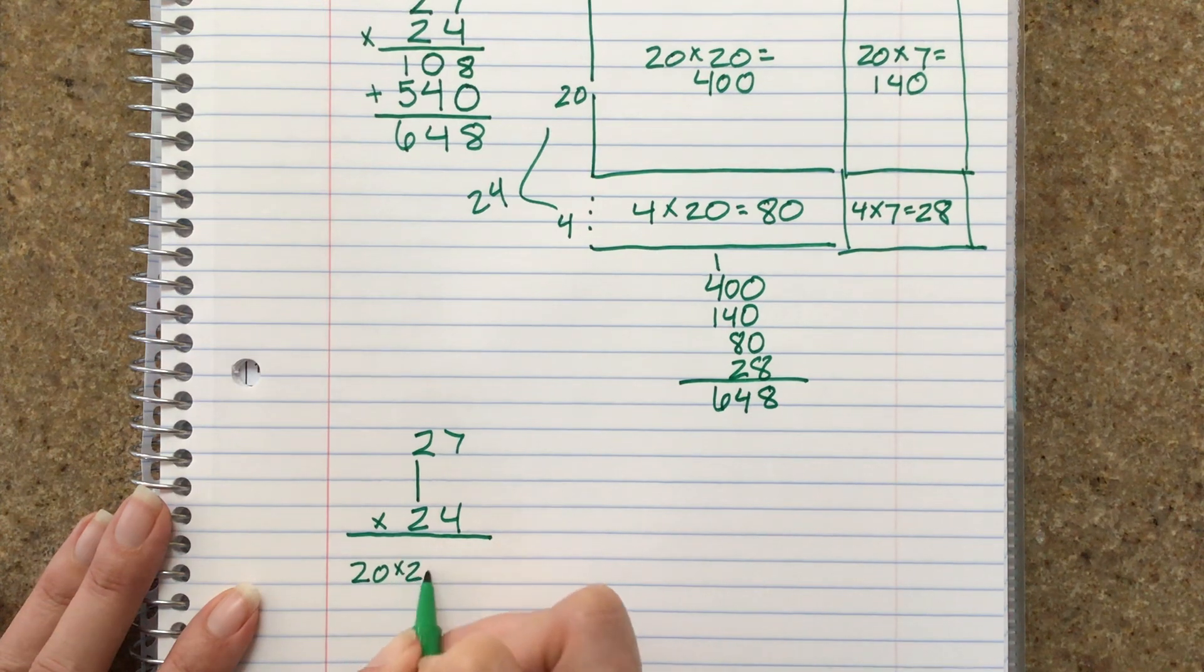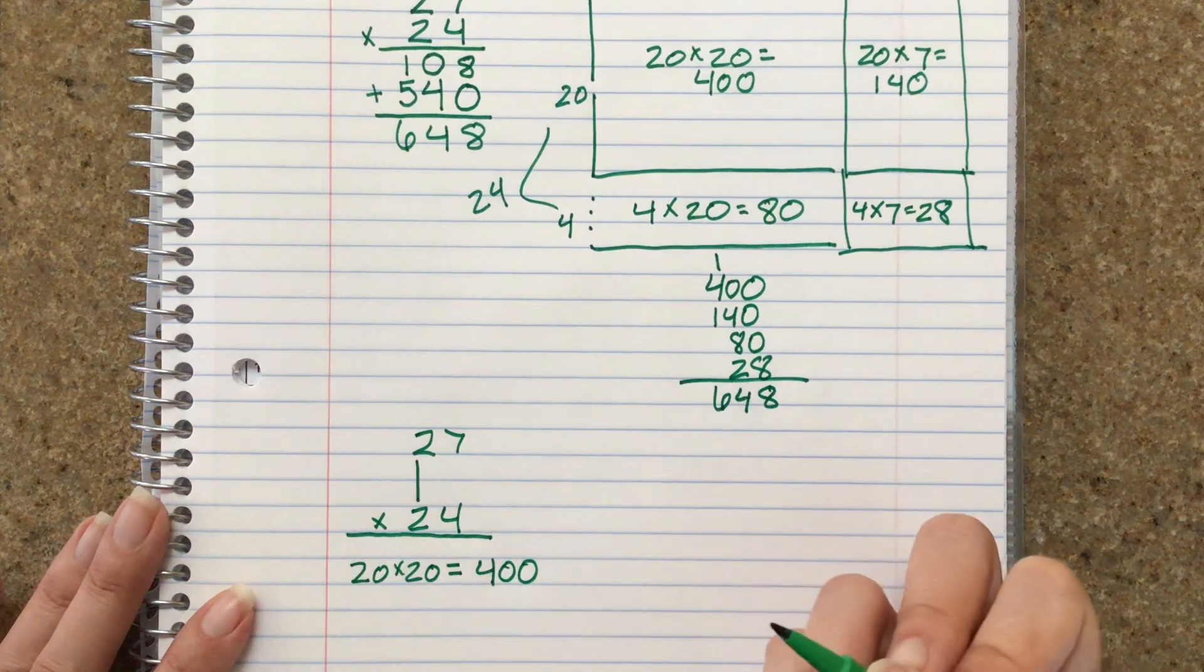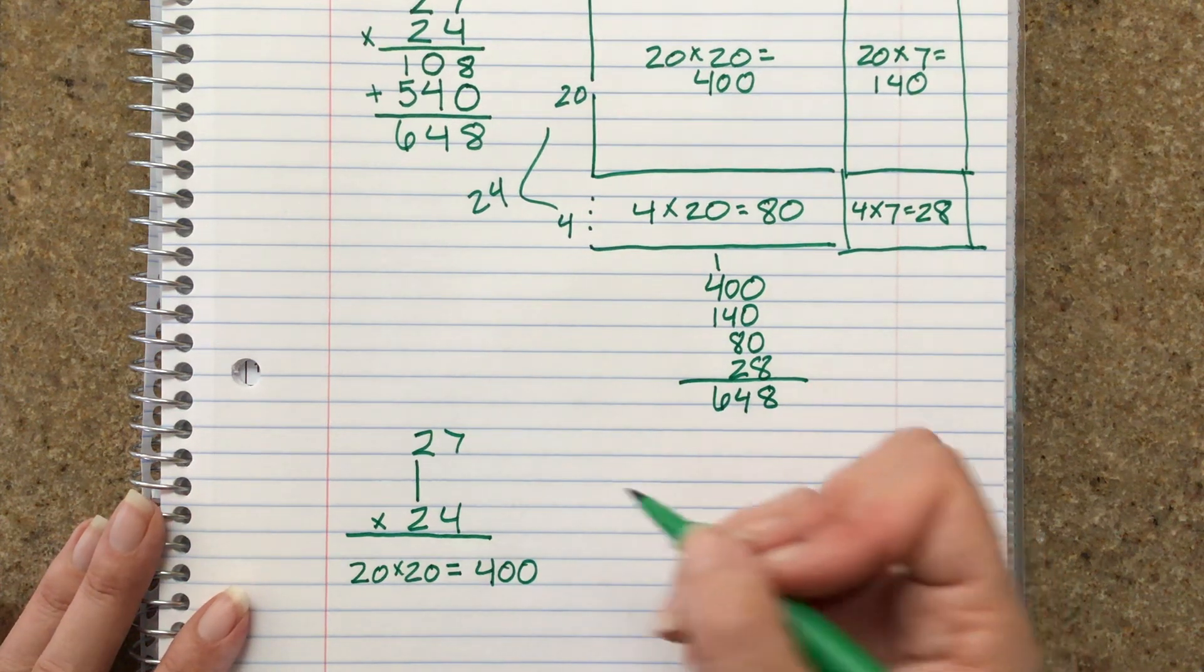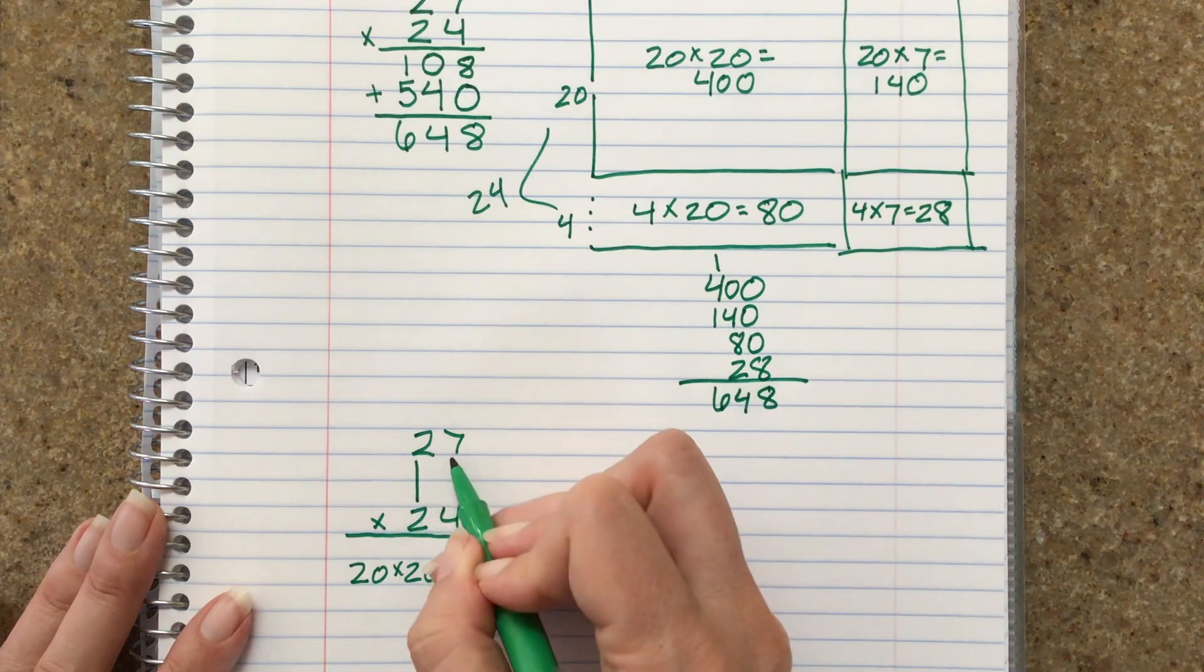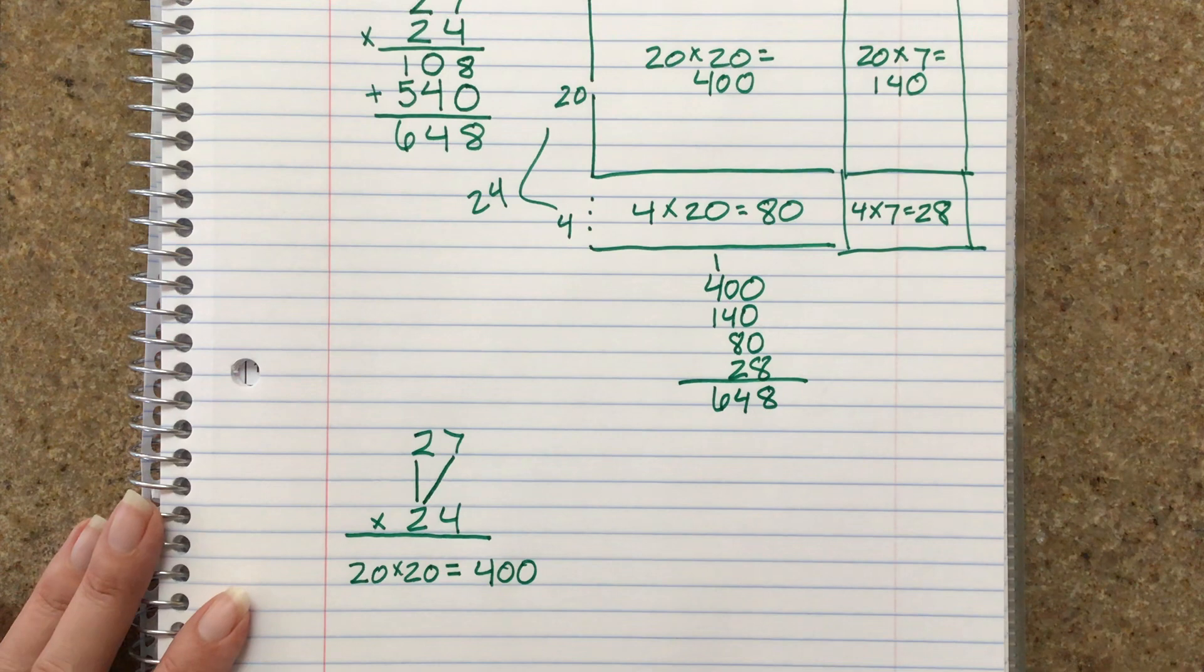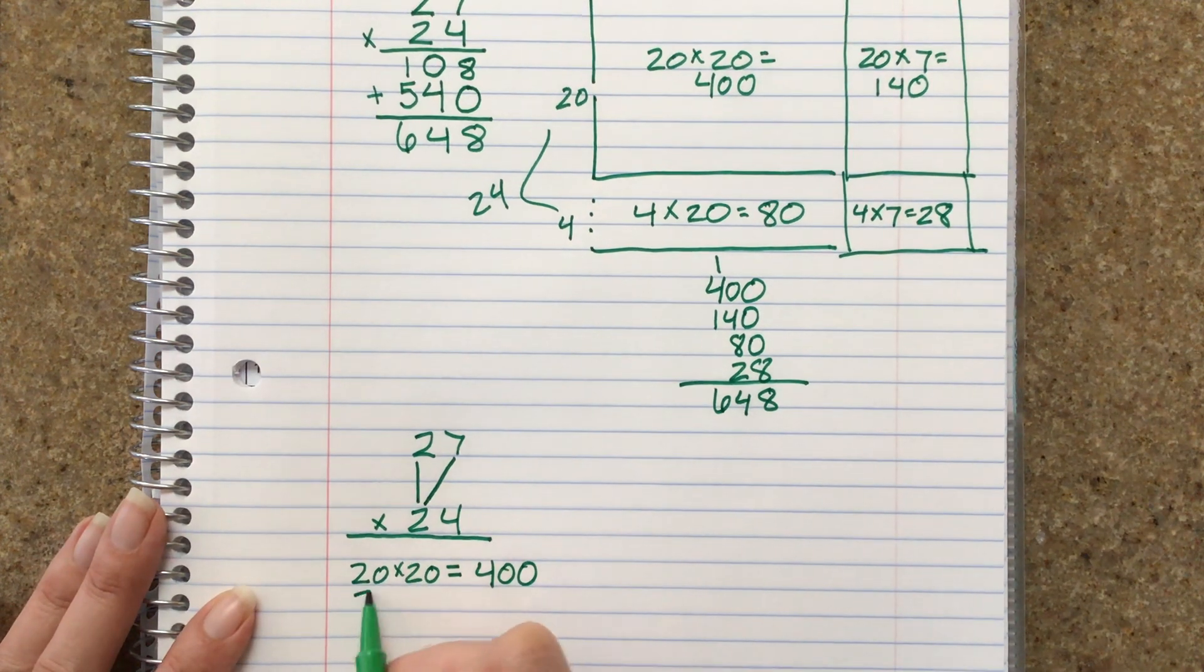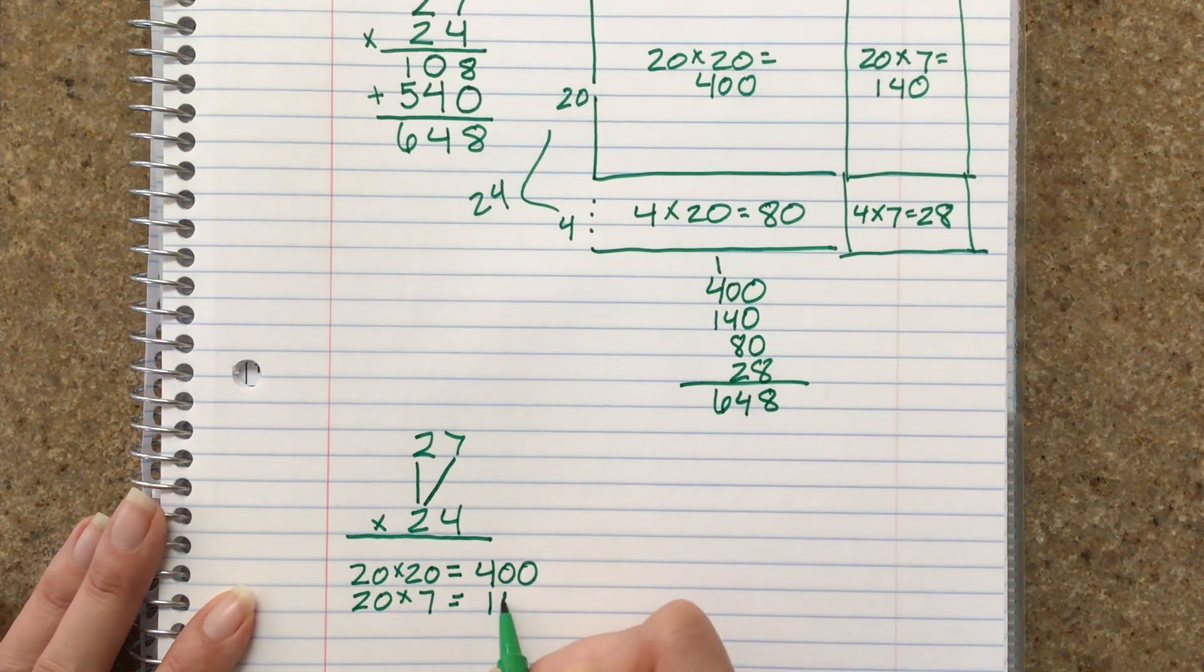20 times 20, which equals 400. Okay, now I'm going to take this 7 and multiply it by this 20 down here. So I'm going to draw a line connecting it like that. So we have this 20 times 7, which equals 140.